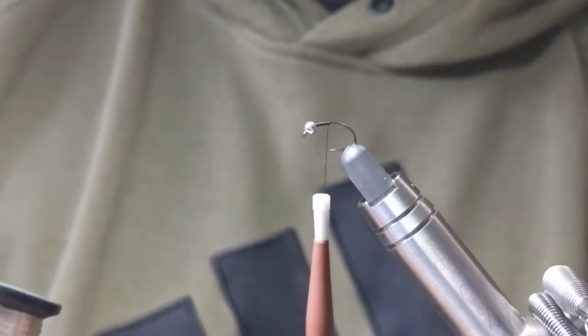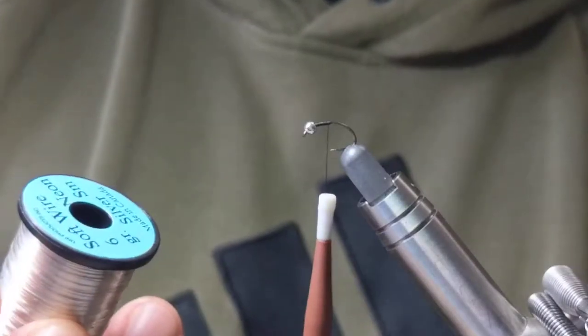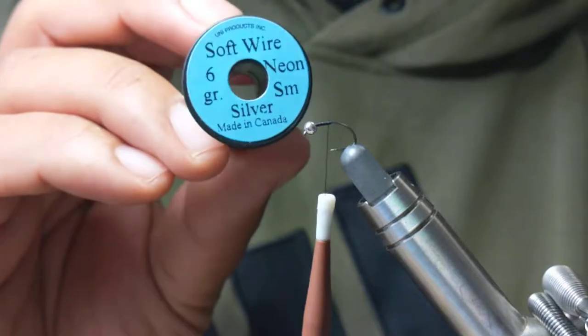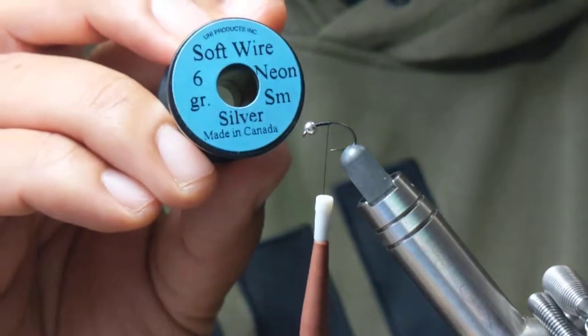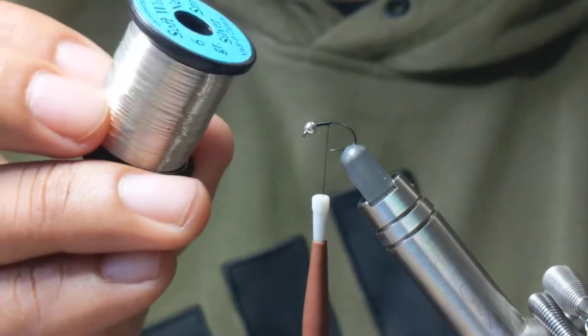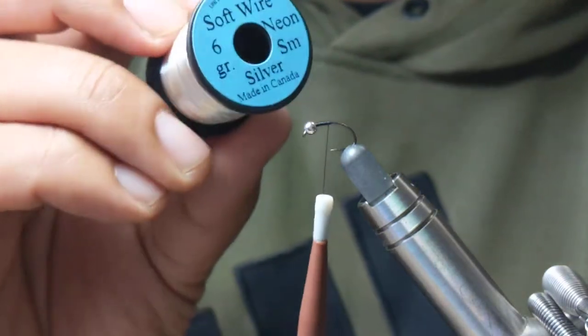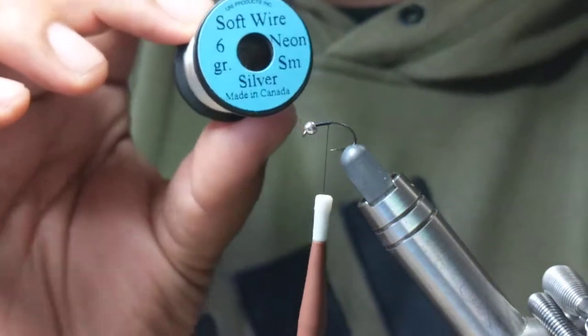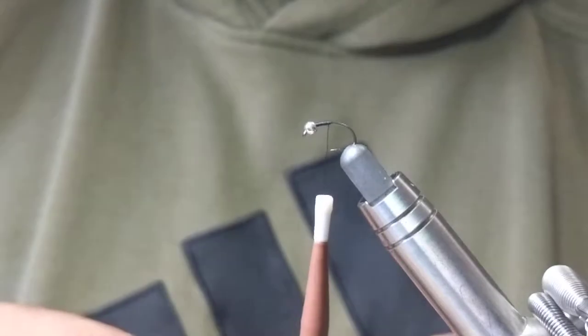What I'm going to do is grab some wire for the ribbing. I like to use soft wire, size small. You could go with ultra wire, which could be even thinner. I don't have silver ultra wire, so again, I'm working with what I got.